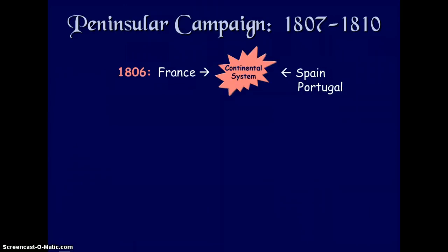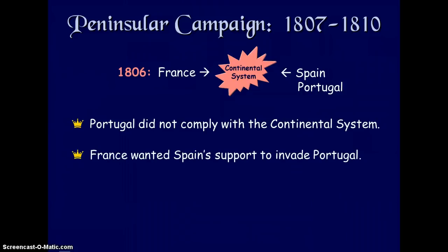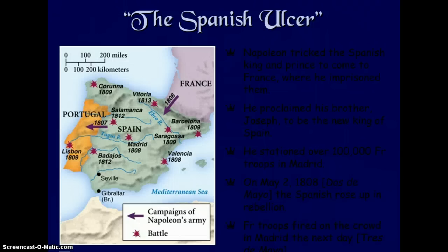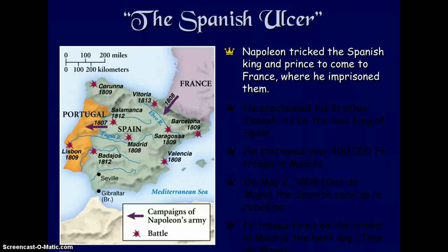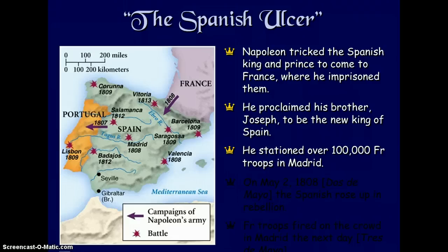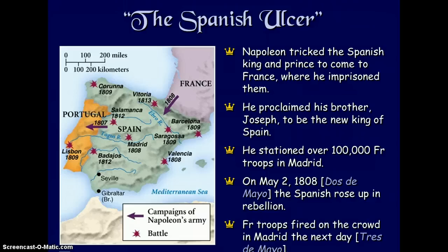In the Peninsular Campaign, France fought Spain and Portugal because they refused to comply with the continental system. Napoleon invaded Spain, took the Spanish king and prince to France as prisoners, and proclaimed his brother Joseph the new king of Spain, stationing over 100,000 French troops in Madrid. On March 2, 1808, the Spanish rose up in rebellion and French troops fired on the crowd in Madrid the next day.